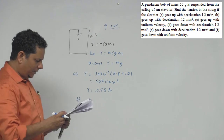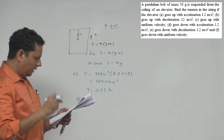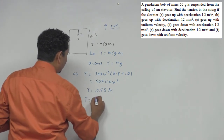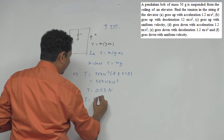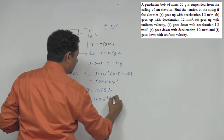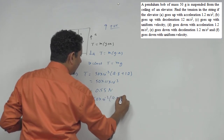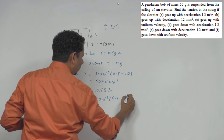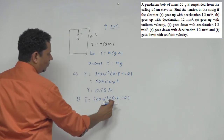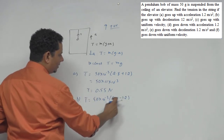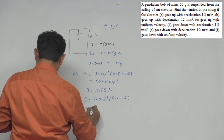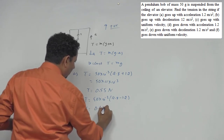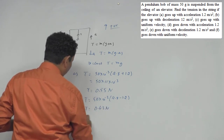Second case में हमें दिया हुआ है, goes up with deceleration 1.2, so tension will be equal to M(g-a): 50 multiplied by 10 to the power minus 3, into 9.8 minus 1.2. इसमें से 1.2 minus करेंगे तो बचेगा आपका 8.6, so आपकी जो tension है उसकी value आ जाएगी 0.43 Newton.